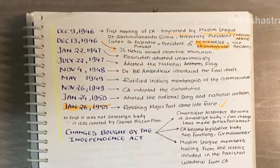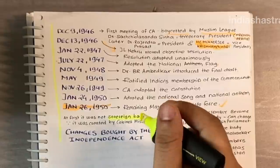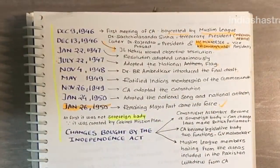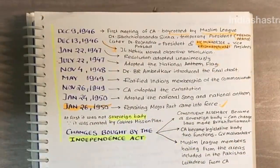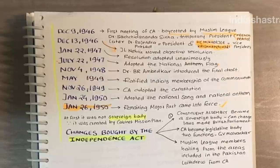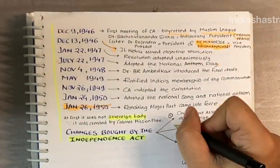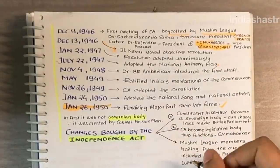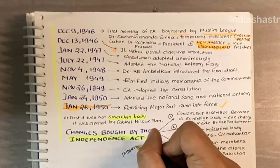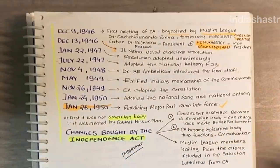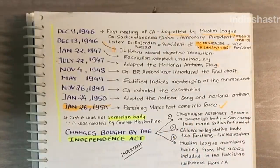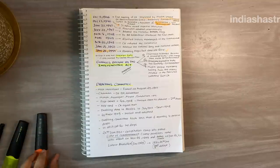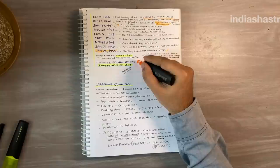At first, the constituent assembly was not a sovereign body, as it was created by the Cabinet Mission plan — a creation of British Parliament. Later, the Independence Act brought changes. The constituent assembly became a sovereign body and could even change laws made by the British Parliament. It also became a legislative body performing two functions: on a given day it acted as a constitution-making body, and on another day it acted as a parliament. Muslim League members from areas included in Pakistan withdrew from the constituent assembly after the Independence Act, when the Pakistan Dominion came into being.